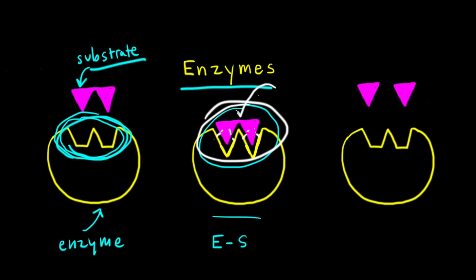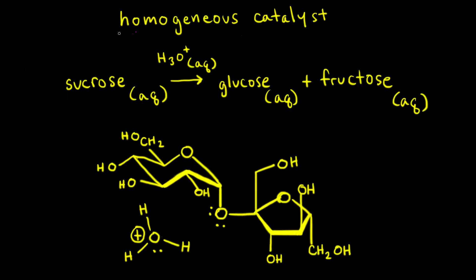Next, let's say the bond between the two triangles breaks, and we get our two products here. So two individual triangles. And the enzyme active site goes back to the original shape, and it's ready to catalyze another reaction.